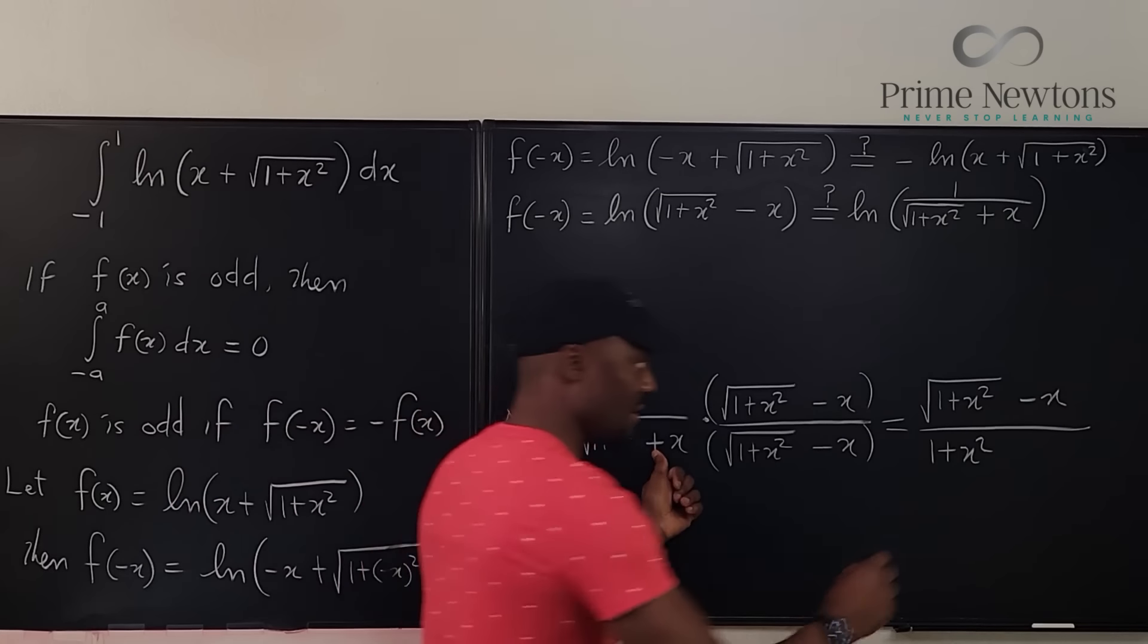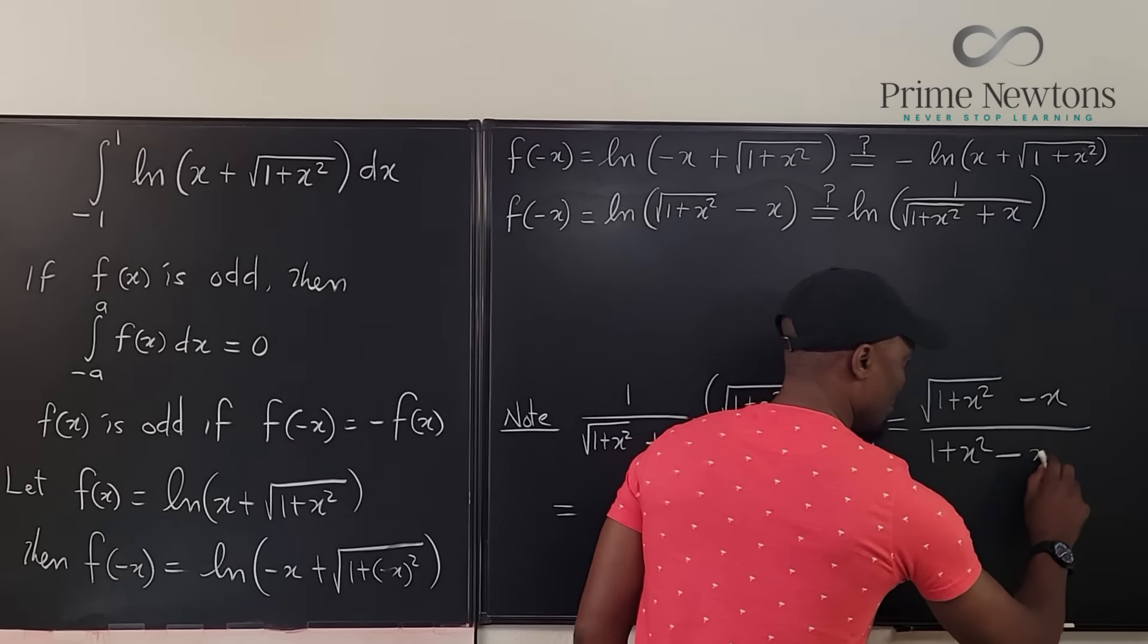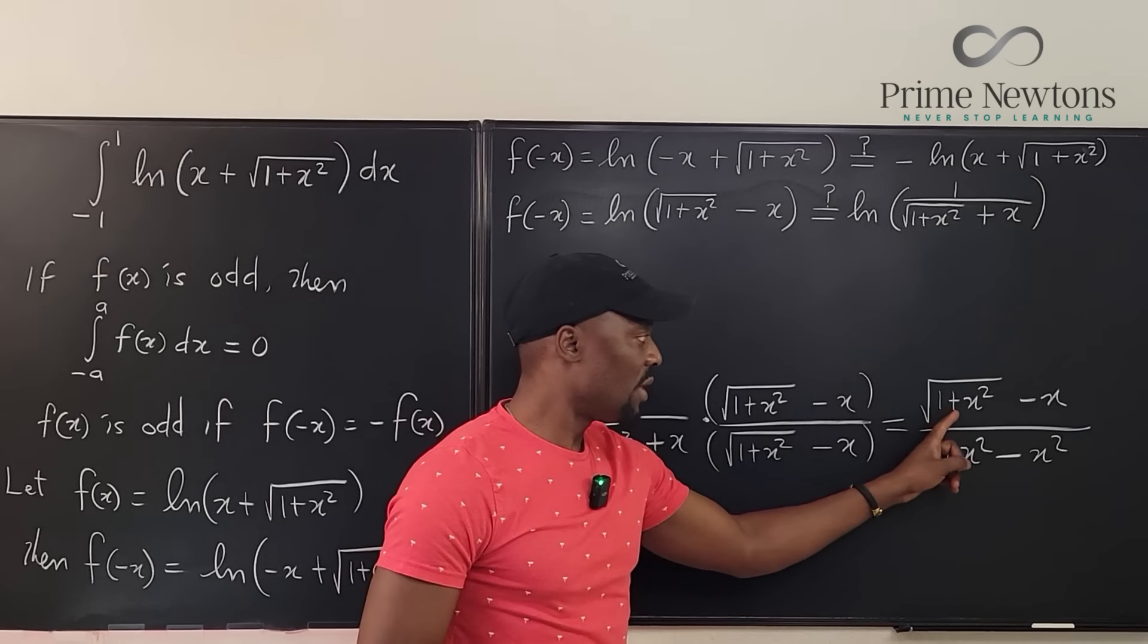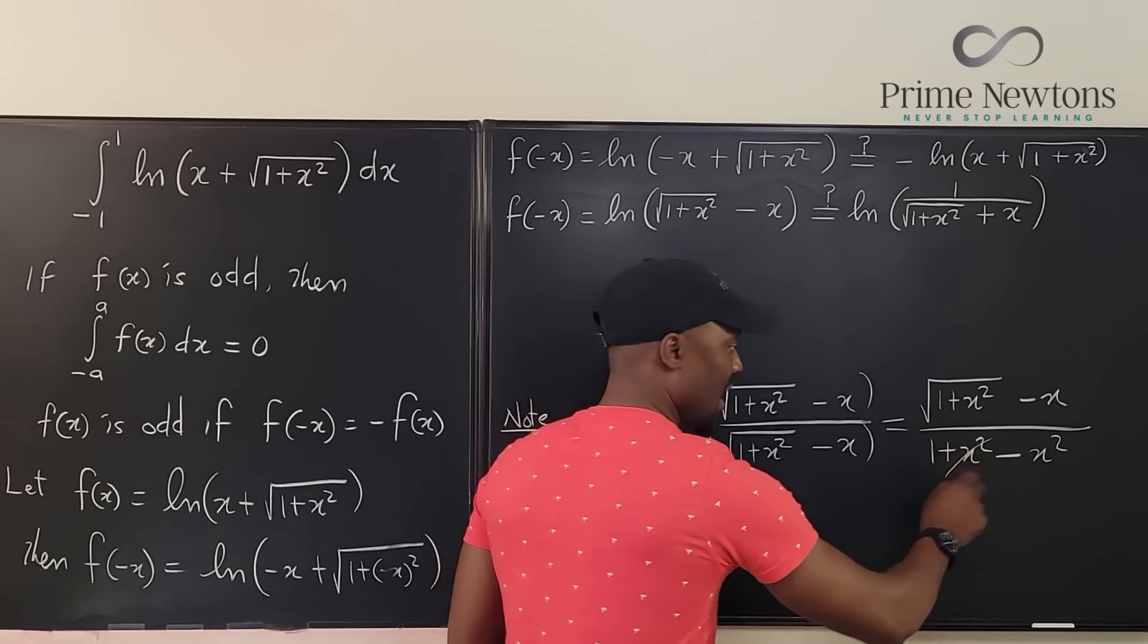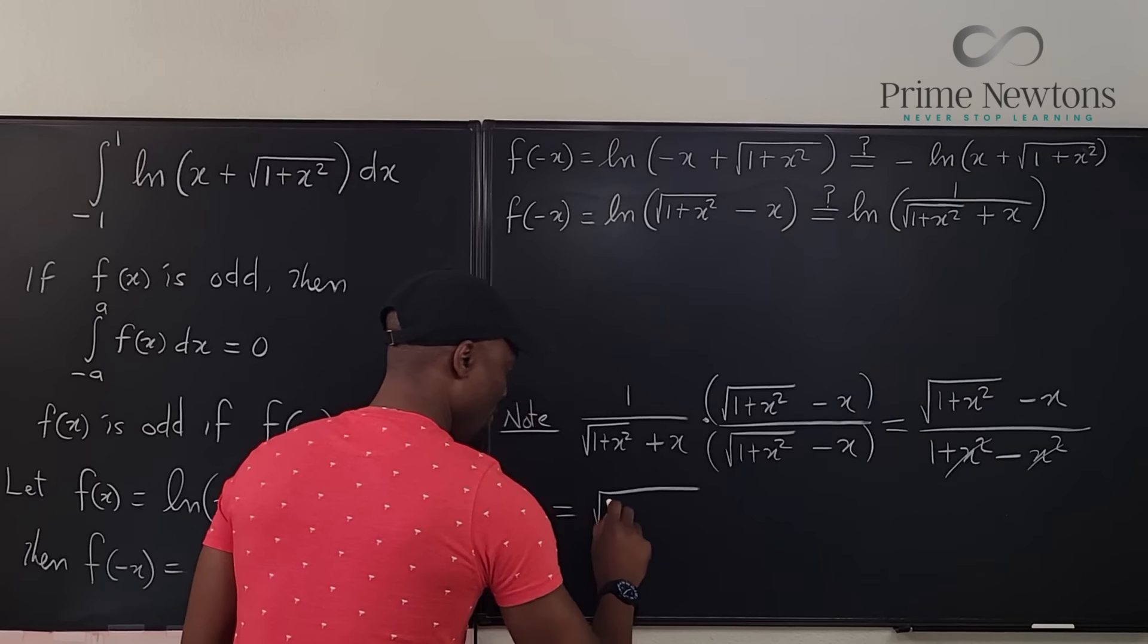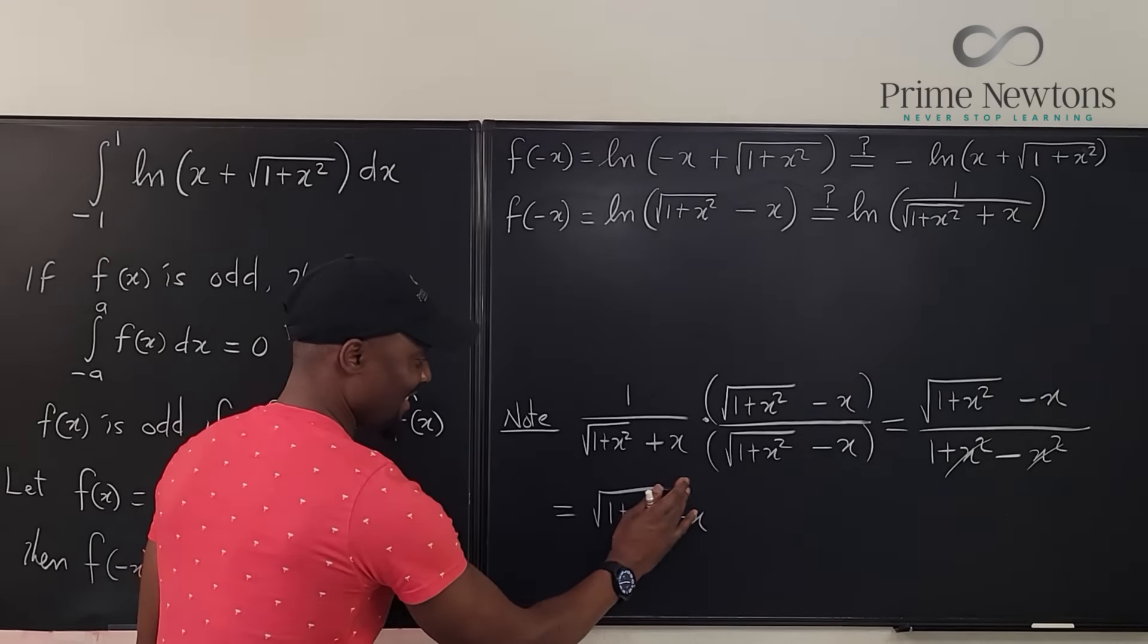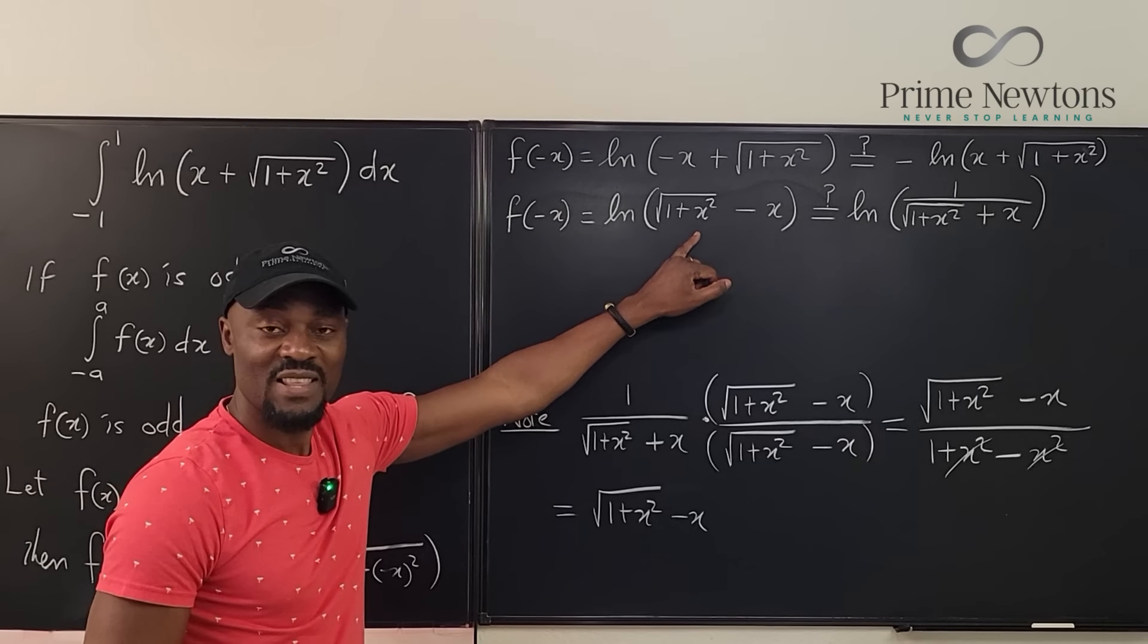And then there's going to be a minus sign in the middle. And you're going to square the second one. It's going to be x squared. Do you see what the answer has turned out to be? It is basically the square root of 1 plus x squared minus x divided by... this cancels this over 1. It's the square root of 1 plus x squared minus x, which is exactly what we're saying, the argument here.